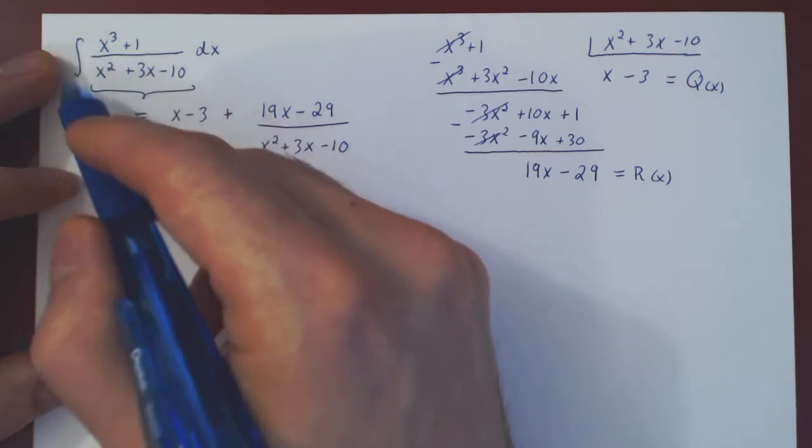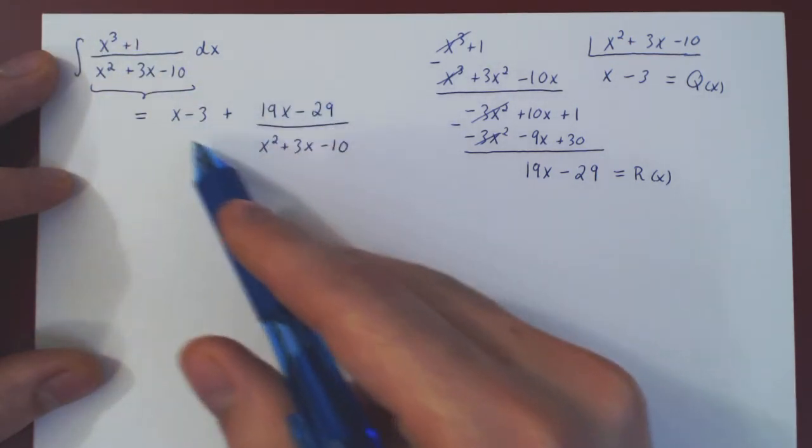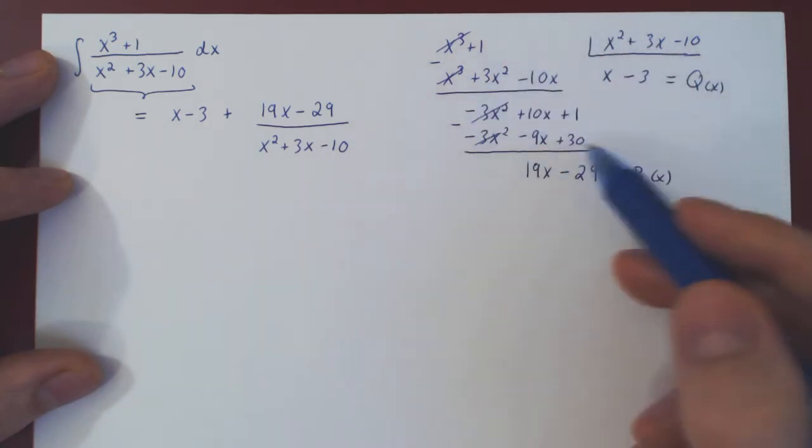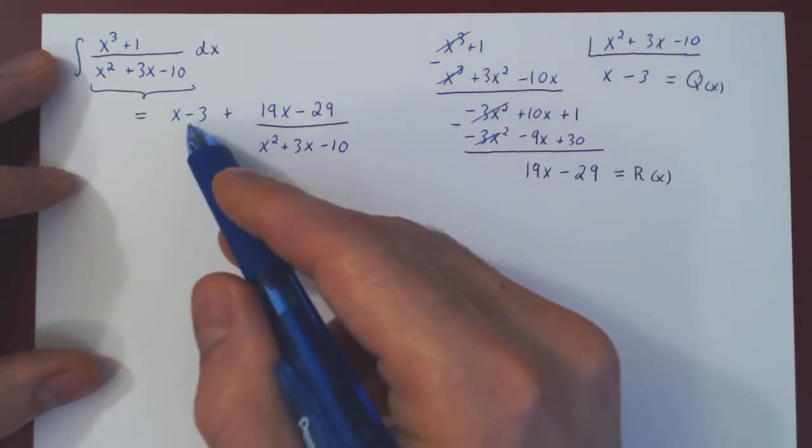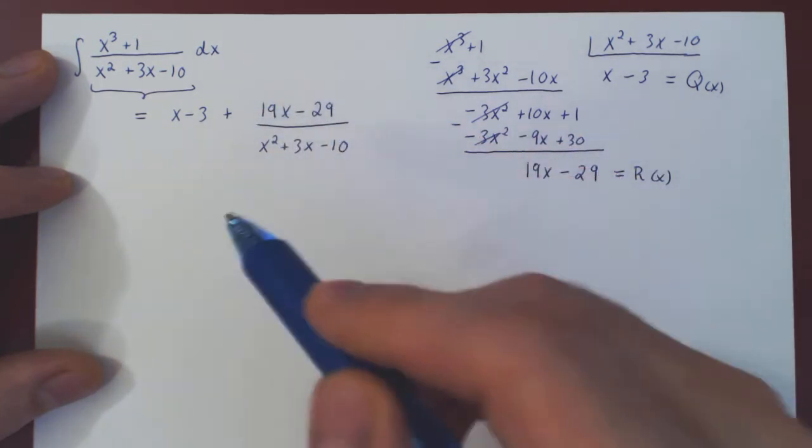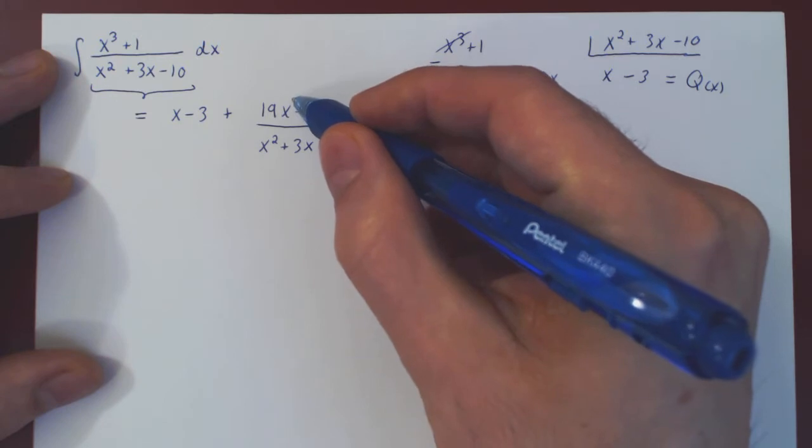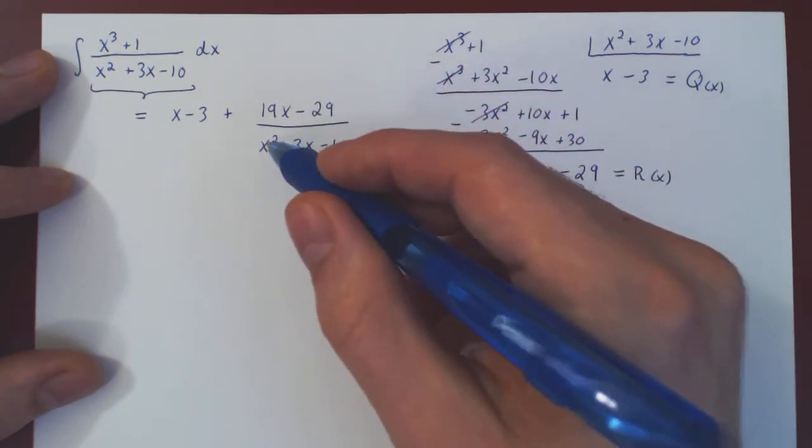Now you can see, instead of integrating the rational function as is, we'll integrate this form coming out of long division. Now the integration of the polynomial will be trivial, so it will remain to integrate this rational function now, where the degree of the numerator, 1, is strictly less than the degree of the denominator, which is 2.